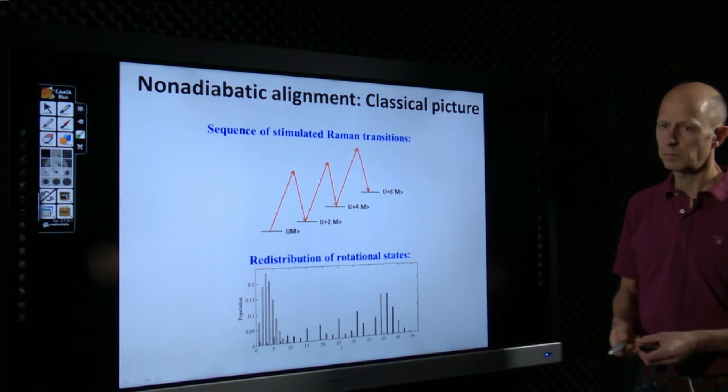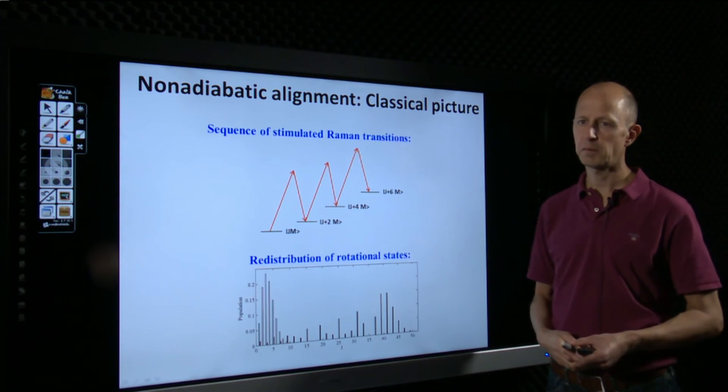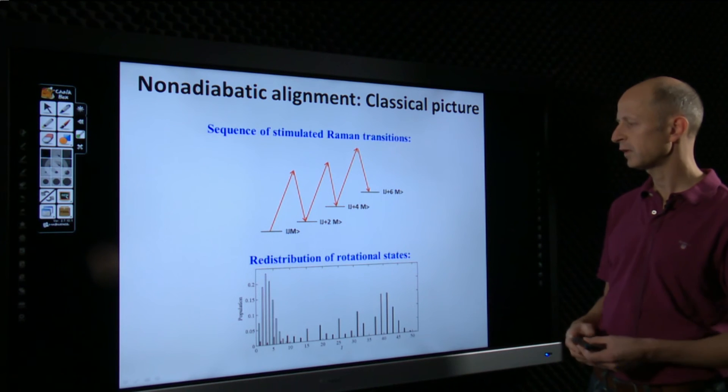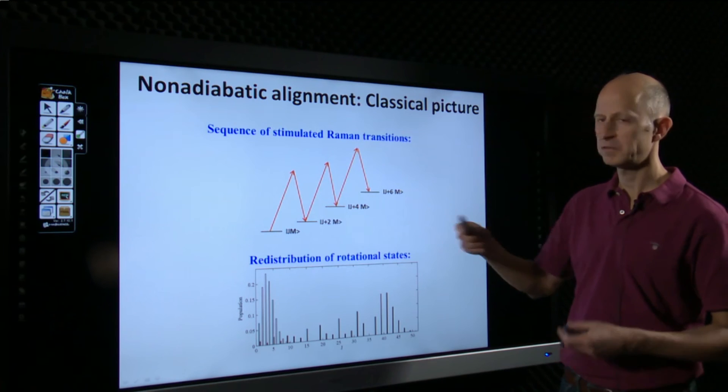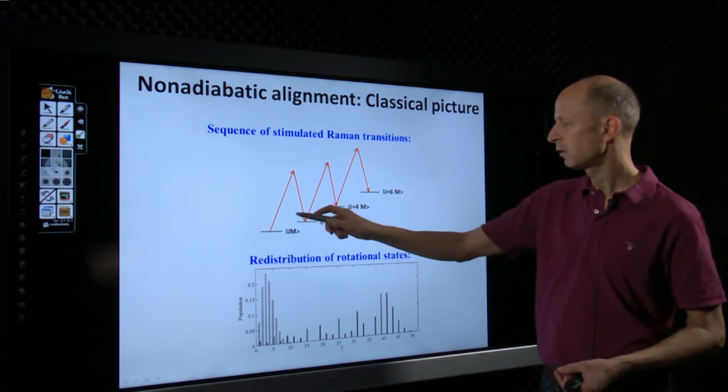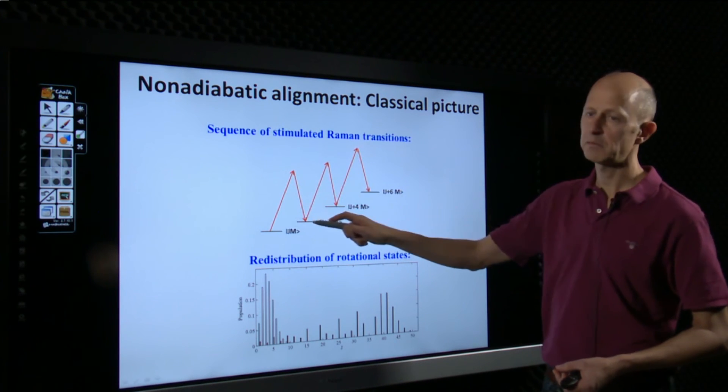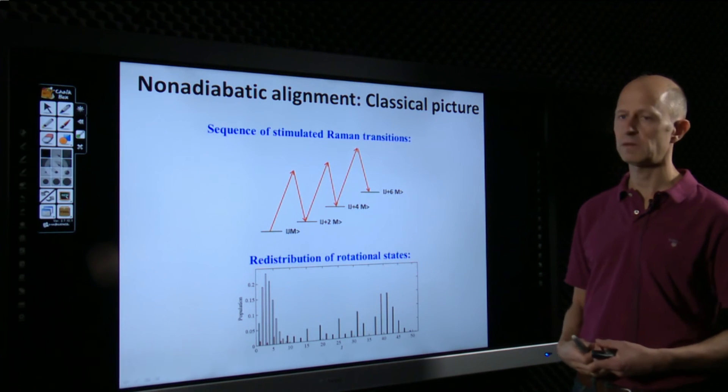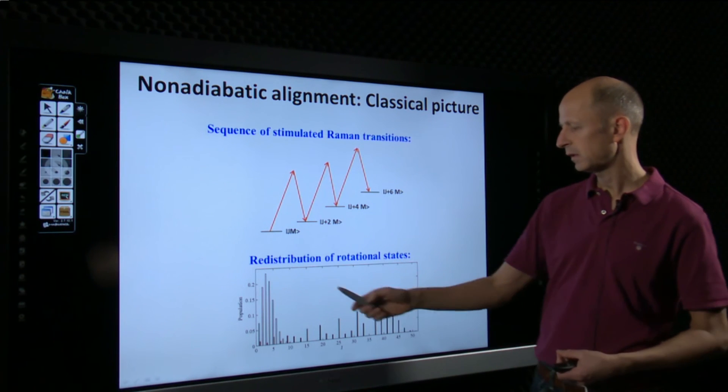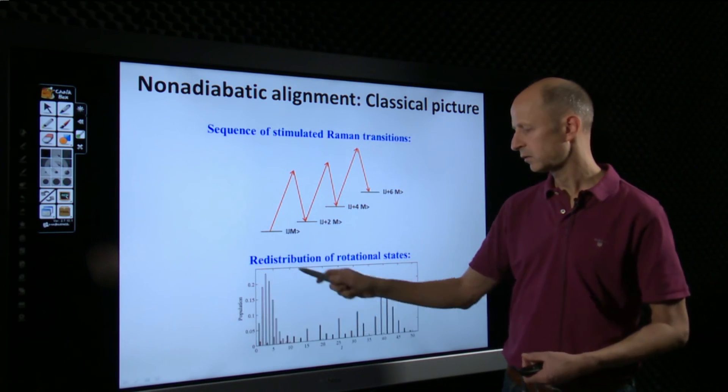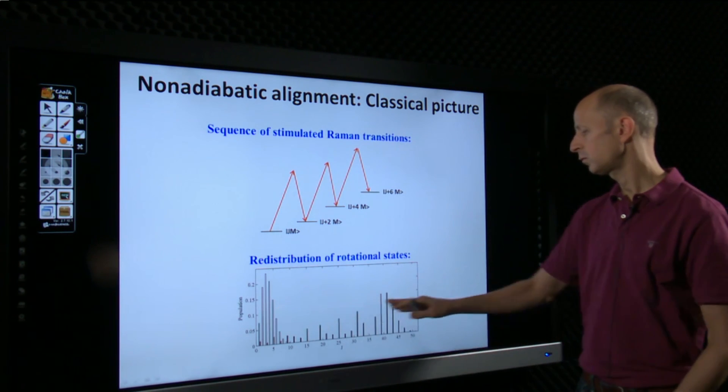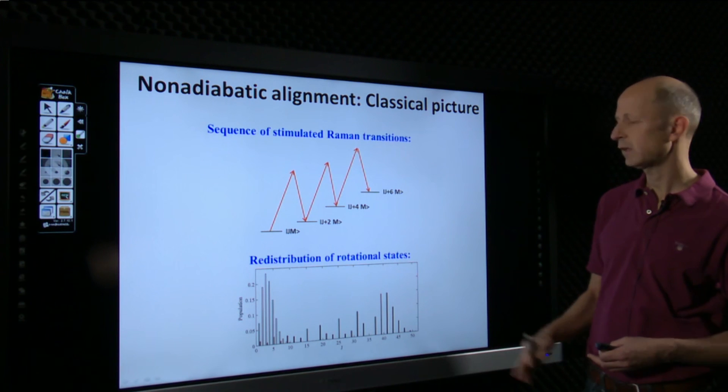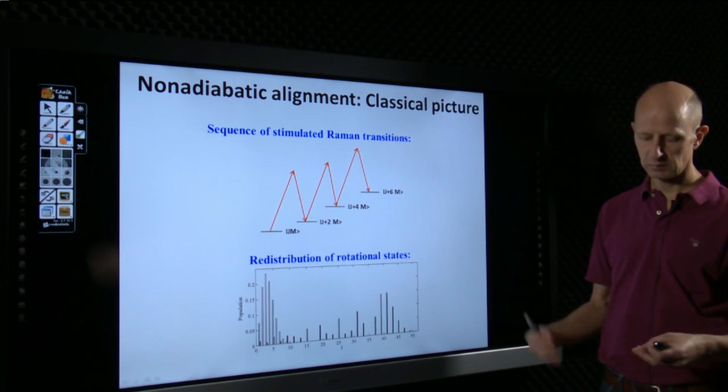This is just to perhaps illustrate what the laser field does in order to create this rotation wave packet. So it basically induces a sequence of stimulated Raman transitions, where both the up and the down photon are contained within the bandwidth of the laser pulse. So it essentially changes distribution rotation states that are initially at low values, to a large range of rotation states that are coherently populated. This gives the wave packet.